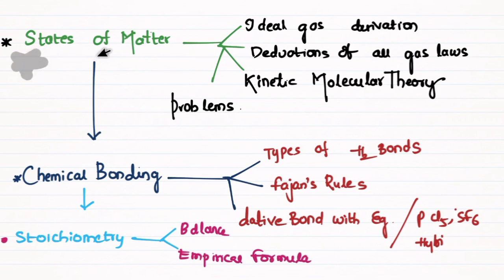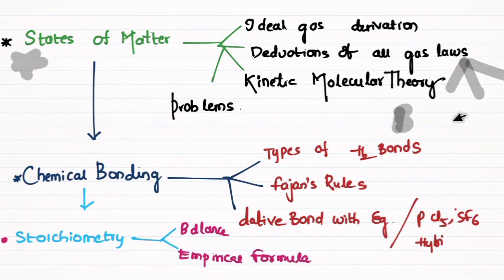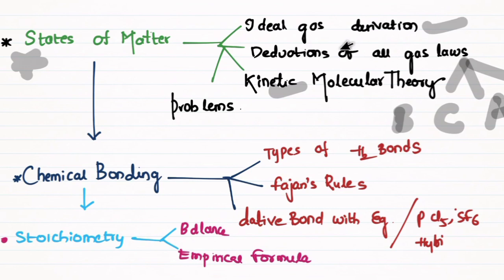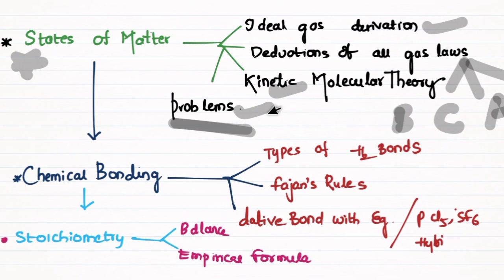States of matter has 4 questions. Topics include deducing different gas laws — Boyle's, Charles', Avogadro's — ideal gas derivation, kinetic gas equation from kinetic molecular theory, and deducing the kinetic gas equation. There are also numerical problems in grams. You can choose from states of matter to complete your answers.